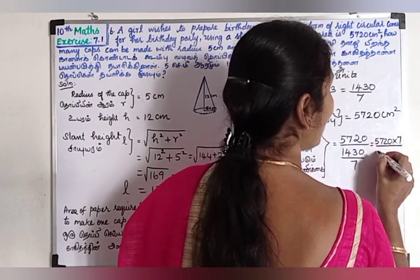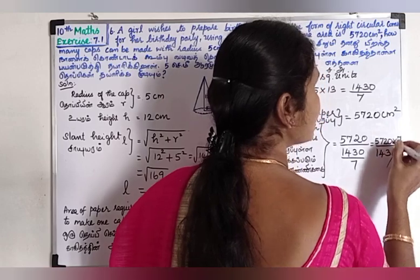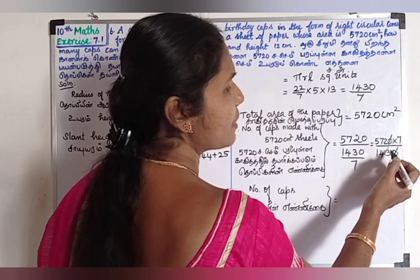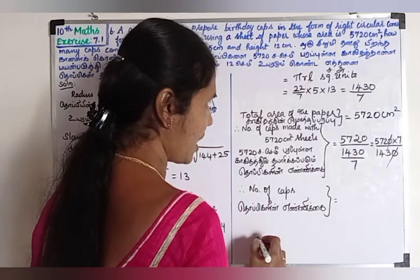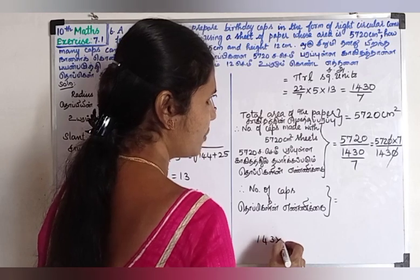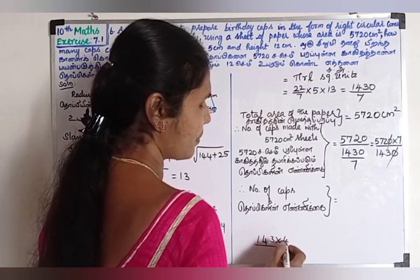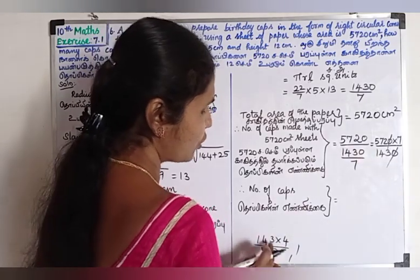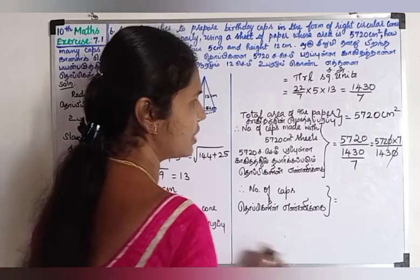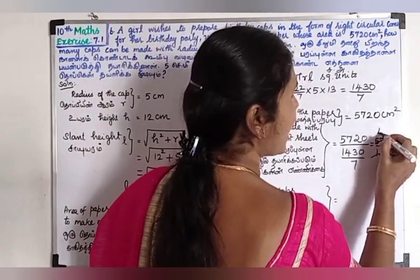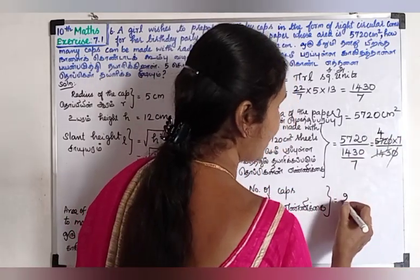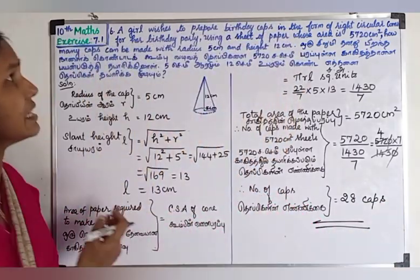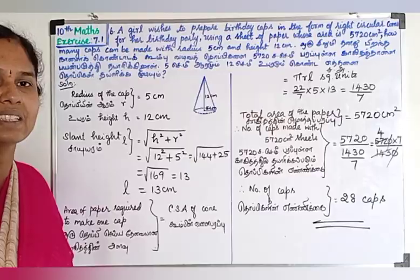So 5720 divided by the curved surface area: 720 into 7 gives 7430. Simplifying the fraction, 4 sevens are 28. Therefore, the answer to the first question is 28 caps can be made.